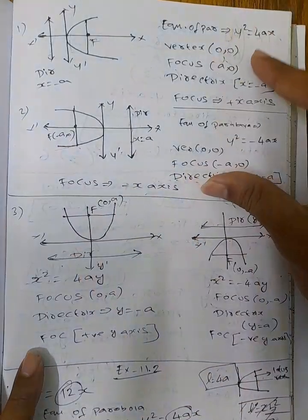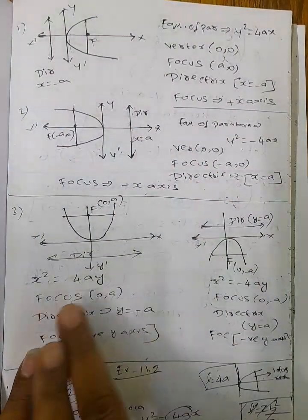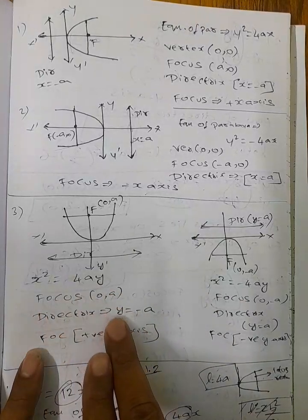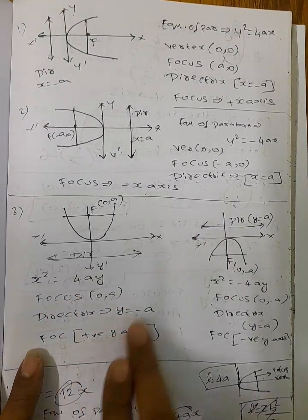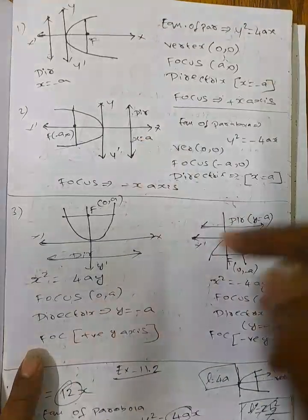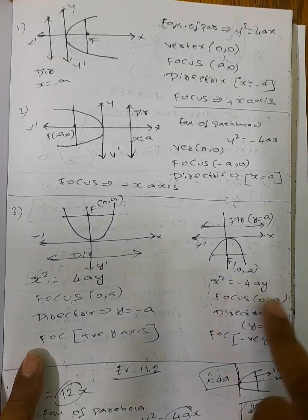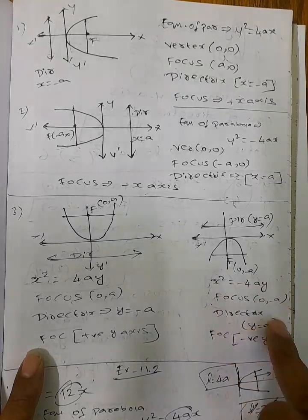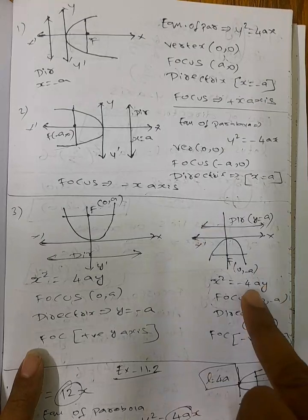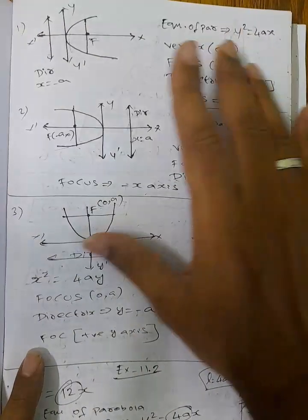Directrix x = a. Upward parabola: x² = 4ay, focus on positive y-axis at (0, a), directrix y = -a. Downward parabola: x² = -4ay, focus at (0, -a), directrix y = a. Focus on negative axis, formula (0, -a).